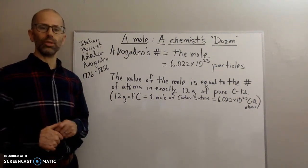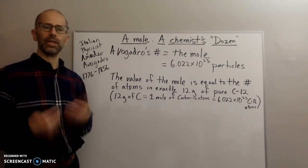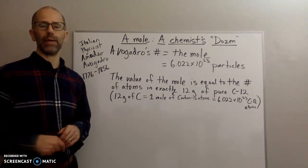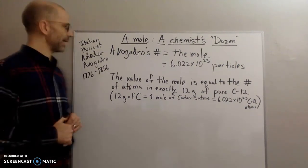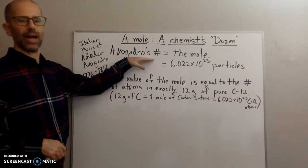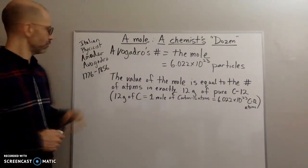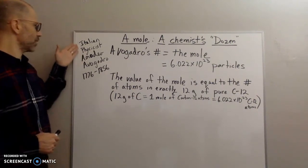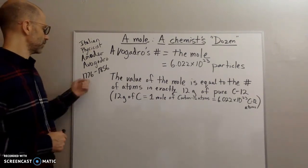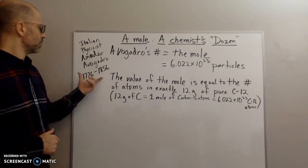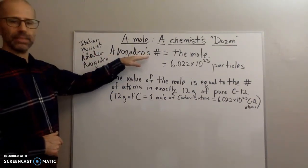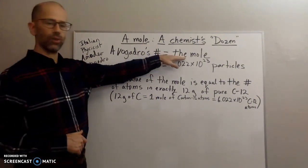So the mole is the same thing. It's become a term that is referring to a particular number. And the number that it's referring to is referred to as Avogadro's number. Avogadro is referring to the Italian physicist Amadeo Avogadro who lived between 1776 and 1856.